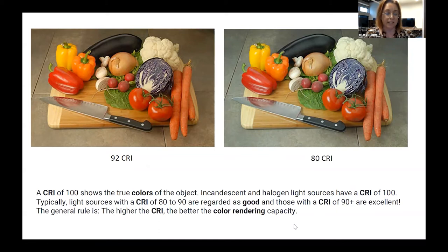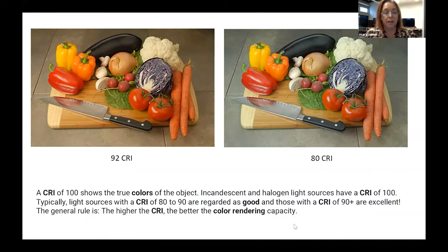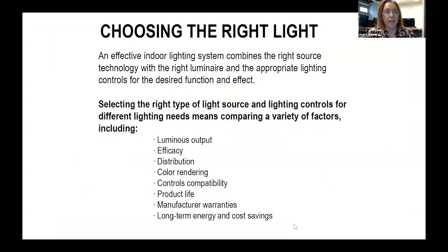Sometimes this balance is a hard problem because the most energy-efficient light bulbs can have difficulty achieving really good color rendering indexes. Incandescent bulbs are excellent light sources but terrible energy hogs. As we move into the era of LEDs, they're getting much better at their CRIs. We're trying to find that happy balance, because we want to maximize energy efficiency while choosing the right source technology with the right lumens and appropriate controls to address the function of your space and achieve the right ambience and effect.